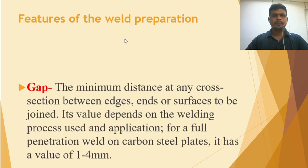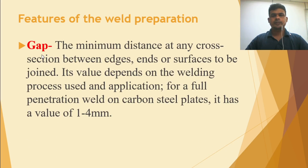What is the root gap? It is the minimum distance at any cross section between the edges, hints, or surfaces of the joint. Its value depends on the welding process used and the application. For a full penetration weld on carbon steel plates, it has a value of 1 to 4 mm — this is the general value, though you still need to follow the WPS.